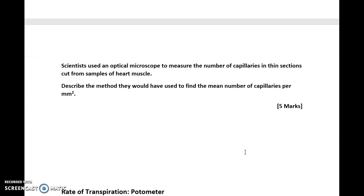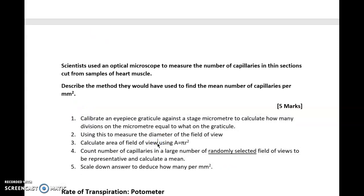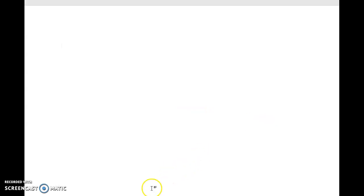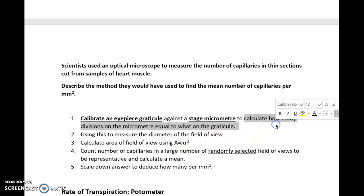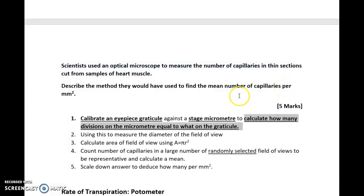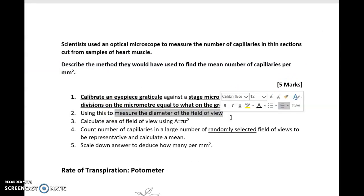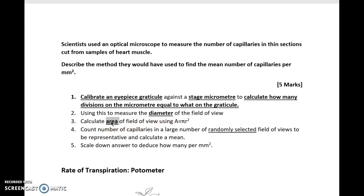Another question: scientists use an optical microscope to measure the number of capillaries in thin sections cut from samples of heart muscle. Describe the method they would have used to find the mean number of capillaries per millimeter squared. This is quite similar to the stomata and the leaf question, but a bit more difficult because obviously you can't really draw around. You've got to find a different way to get the area. So again, calibrate with an eyepiece graticule against a stage micrometer to calculate how many divisions on the stage micrometer equal to what on the eyepiece graticule. In doing that, you need to measure the diameter of the field of view. Because we're going to be using area equals pi r squared, we need to make sure that we get the diameter. Then we calculate the area of the field of view using A equals pi r squared.